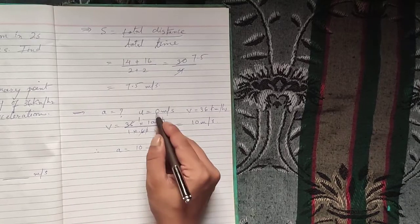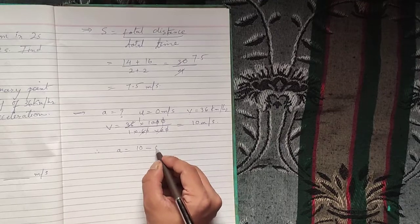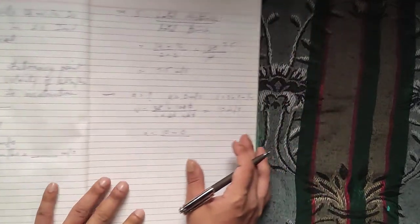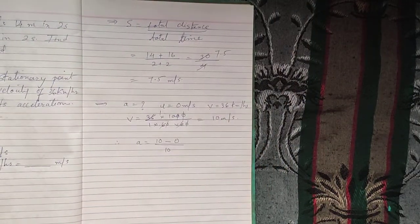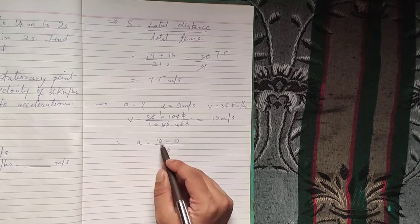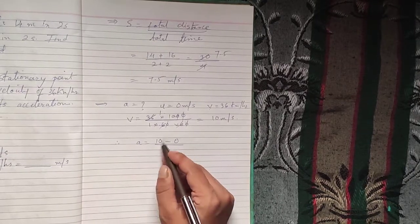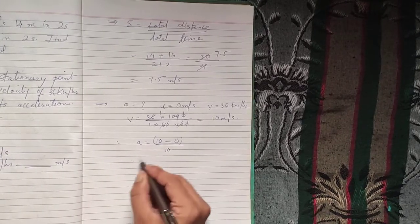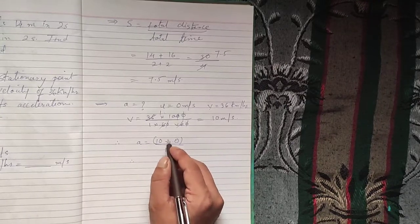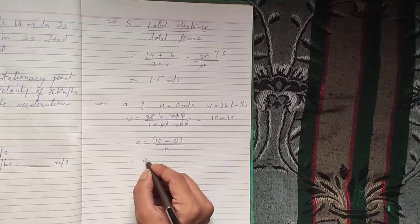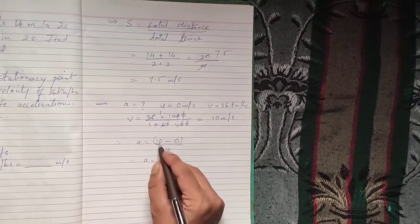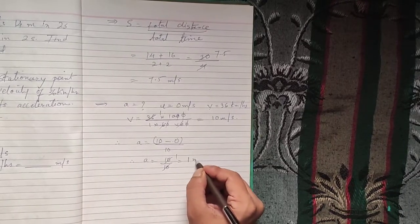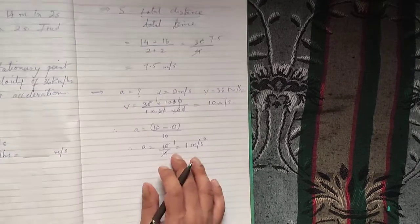Acceleration a equals v (which is 10) minus u (which is 0), upon time taken — the question states 10 seconds. Remember, this is a subtraction before division, so solve the numerator first: 10 minus 0 is 10, upon 10, which becomes 1.